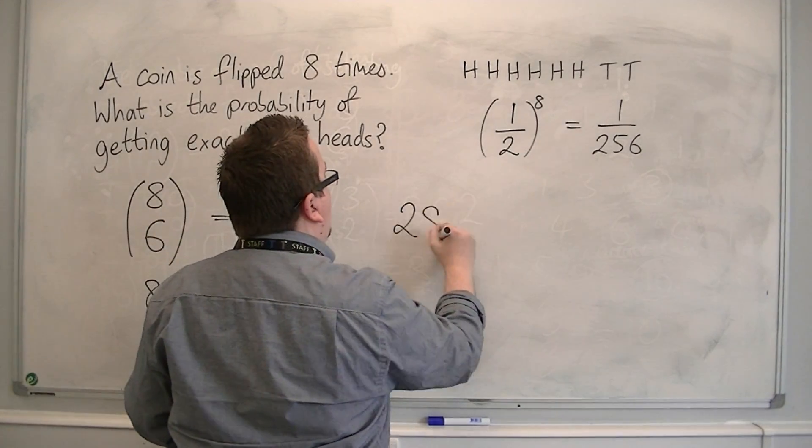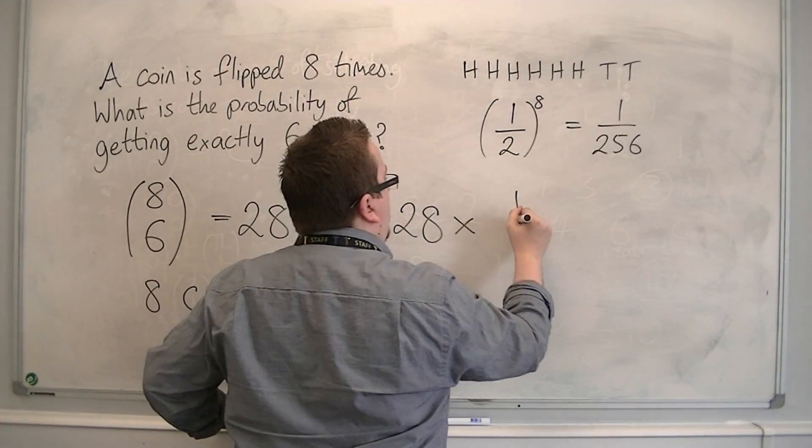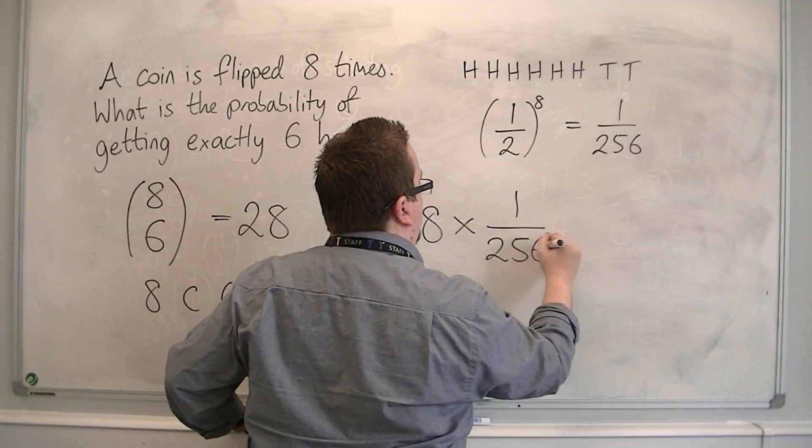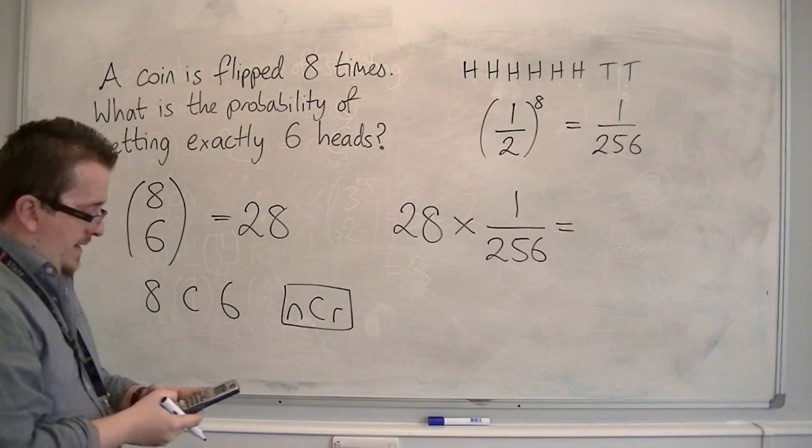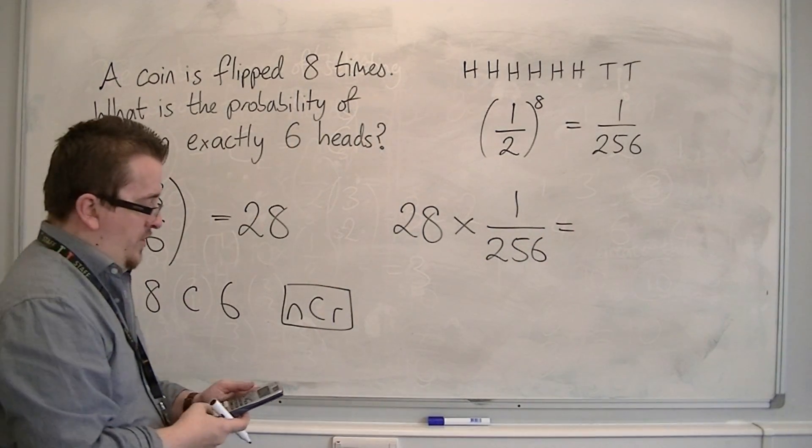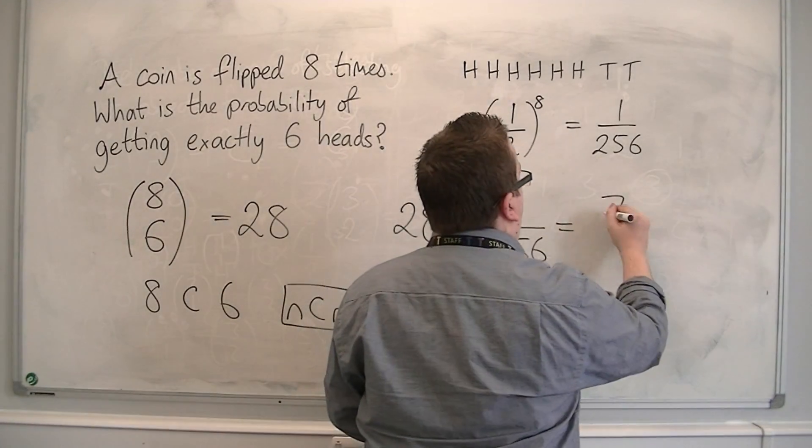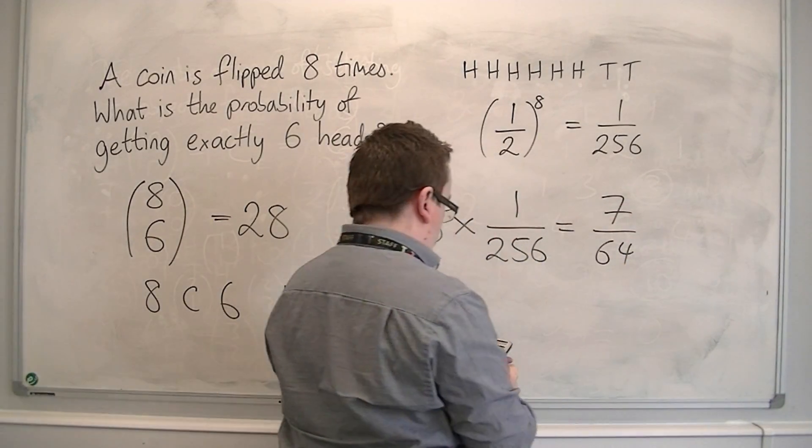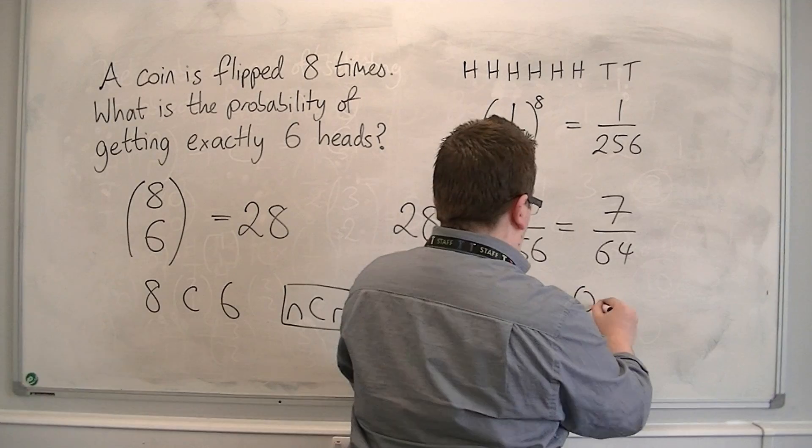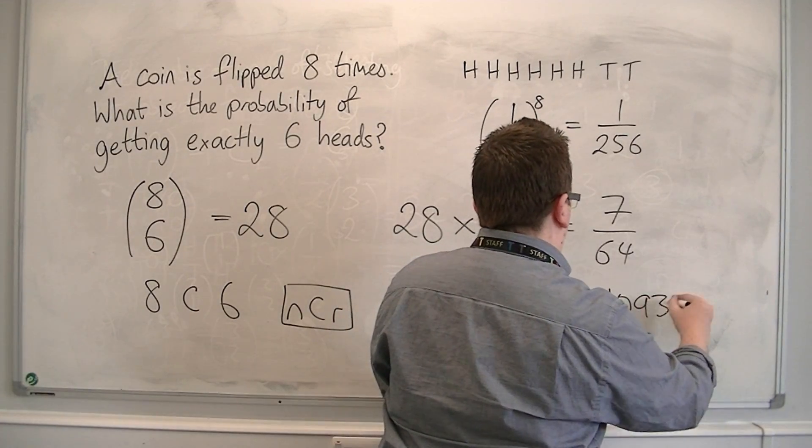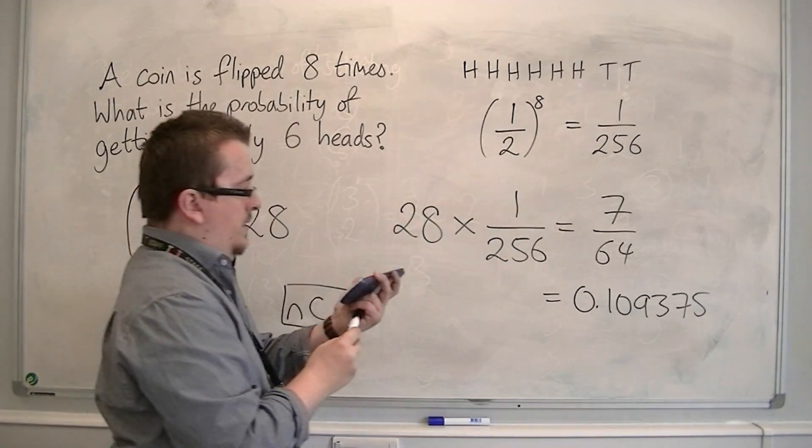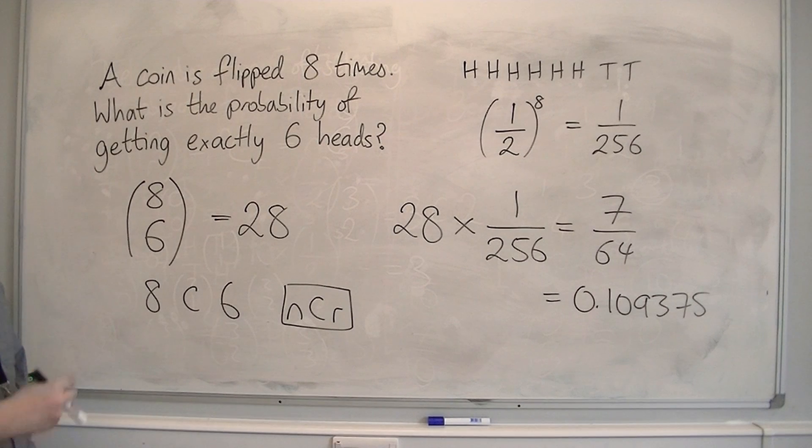And so we want 28 combinations times the probability of one of them. So 28 times 1 over 256 gives me 7 over 64, which is 0.109375. So that's the probability of getting exactly 6 heads out of 8 flips of a coin.